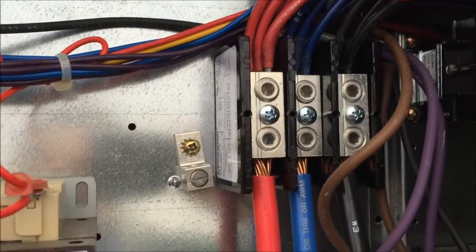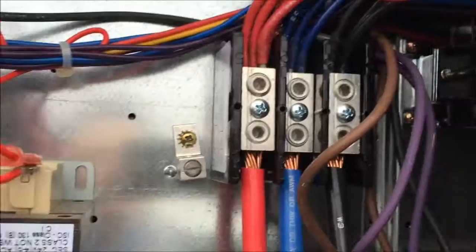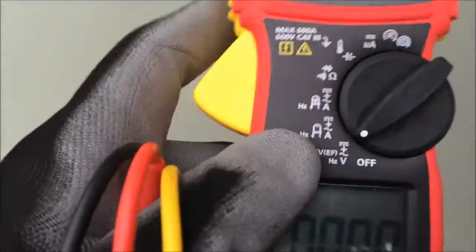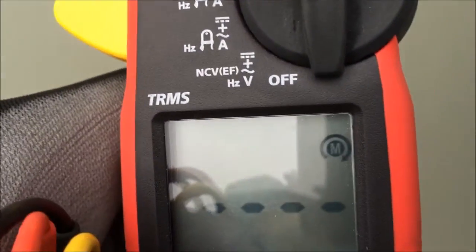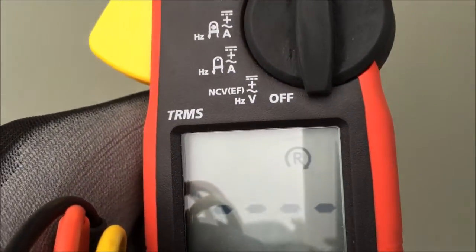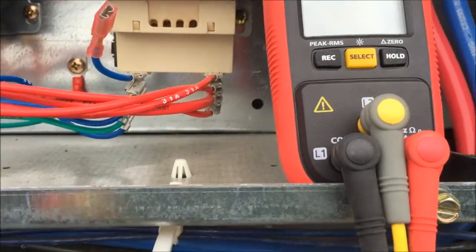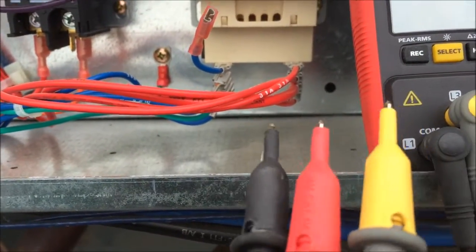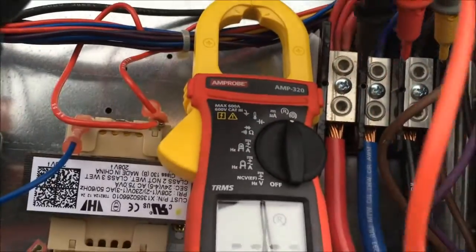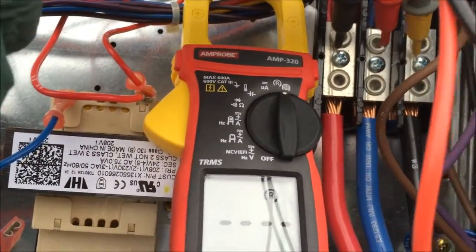So I'm going to turn my meter to R. You got to turn it there and then hit select because it'll go to motor. Hit select, goes to rotation. Black is L1, red is L2, yellow is L3. Get them on there respectively.